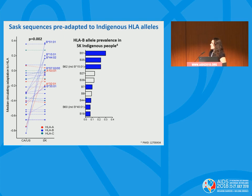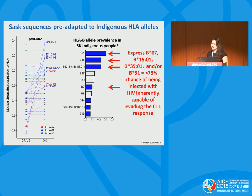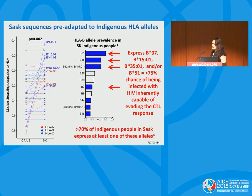HLA-specific adaptation is higher in Saskatchewan relative to the rest of North America, particularly for seven HLA alleles labeled here. Many of these alleles are highly prevalent in indigenous peoples of Saskatchewan. A Saskatchewan resident who expresses HLA-B07, B1501, B3501, and/or HLA-B51 has a greater than 75% chance of being infected with HIV that is inherently capable of evading their CTL response — and greater than 70% of indigenous peoples in Saskatchewan express at least one of these alleles.